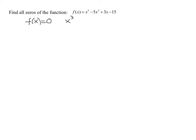So we're going to set x cubed minus 5x squared plus 3x minus 15 equal to zero. And now we have to solve this equation. Well what kind of equation is it? It's degree 3, it's a cubic equation.